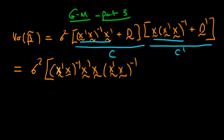As we simplify, we note that this is actually some matrix A times its inverse times itself. Any matrix A inverted times itself is just the identity matrix. So these two things cancel one another, and we're just left with this last term, because the identity matrix times this last term is just this last term.